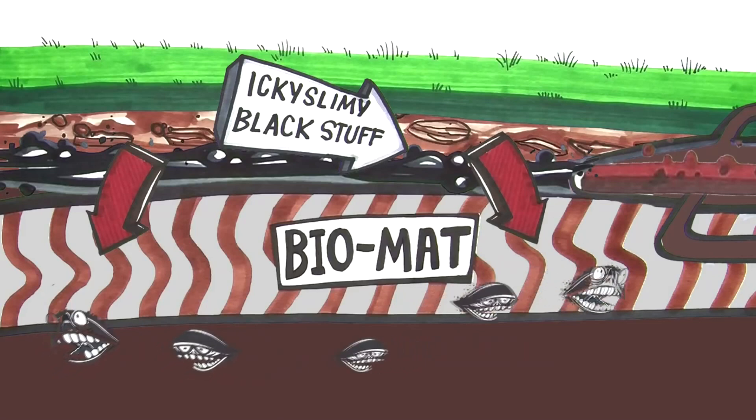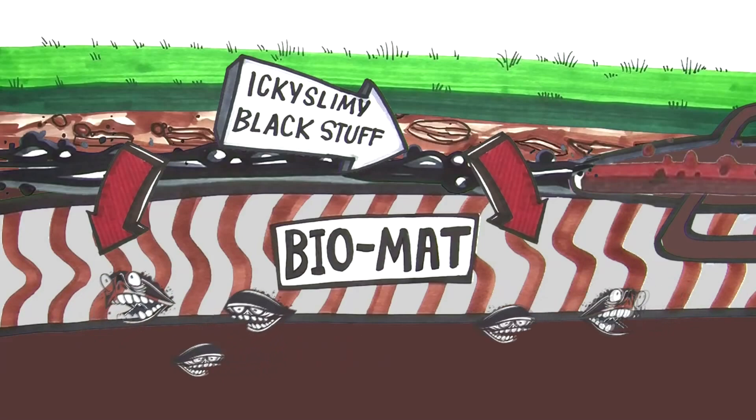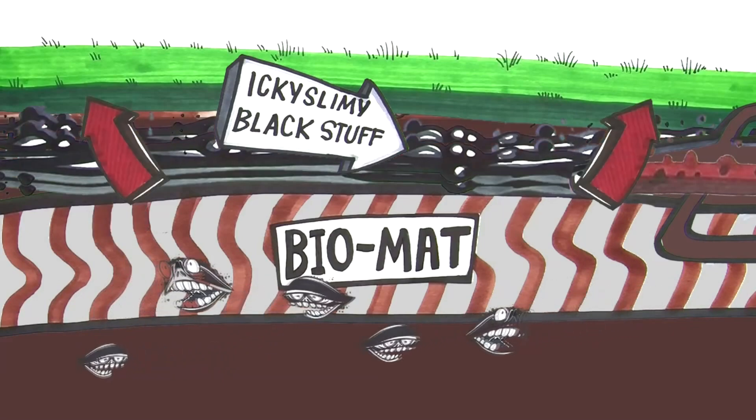Wastewater can still flow through this biomat initially, but over time, the accumulation of this substance becomes too much, leading to a clog and, inevitably, system failure.